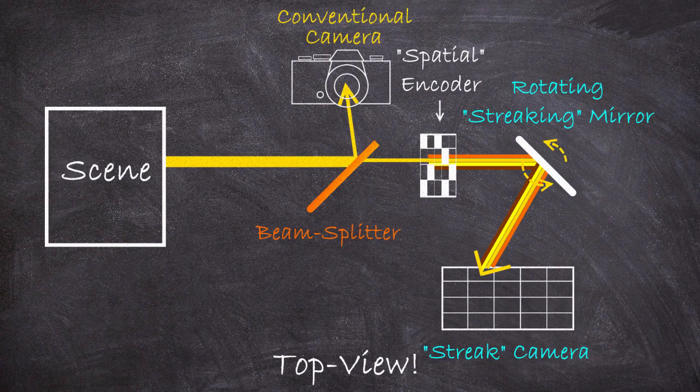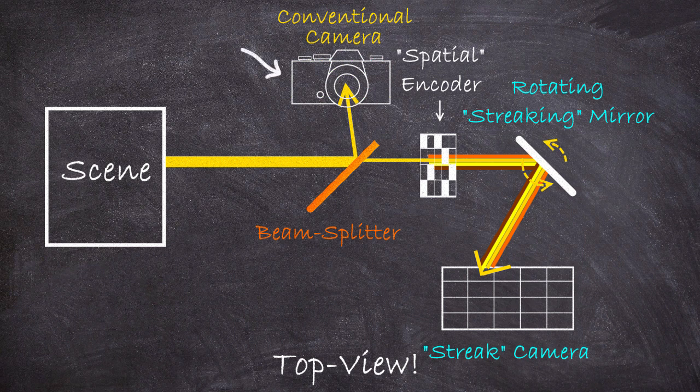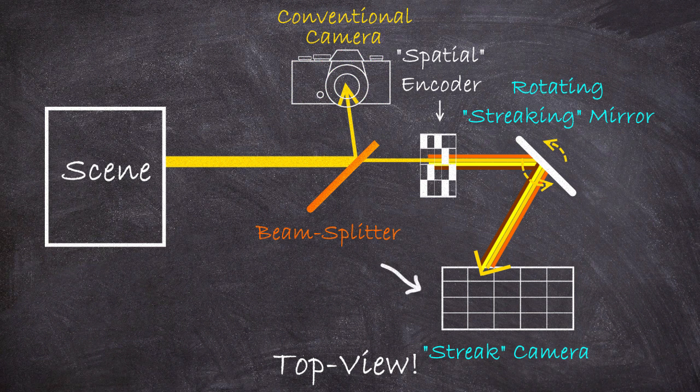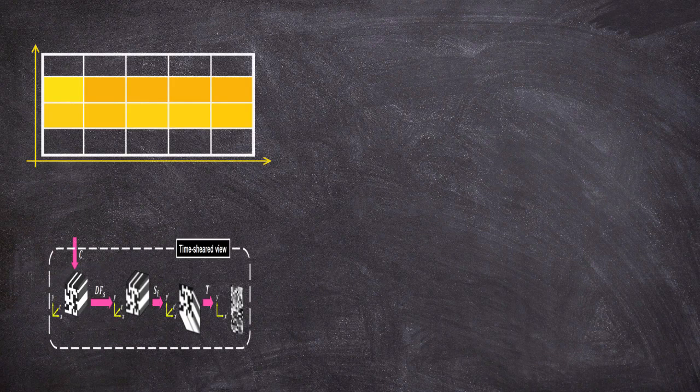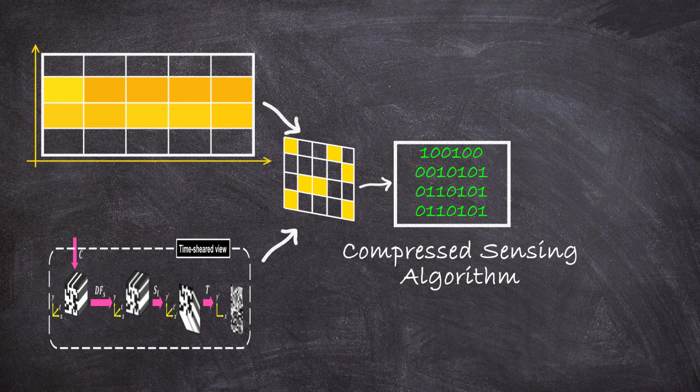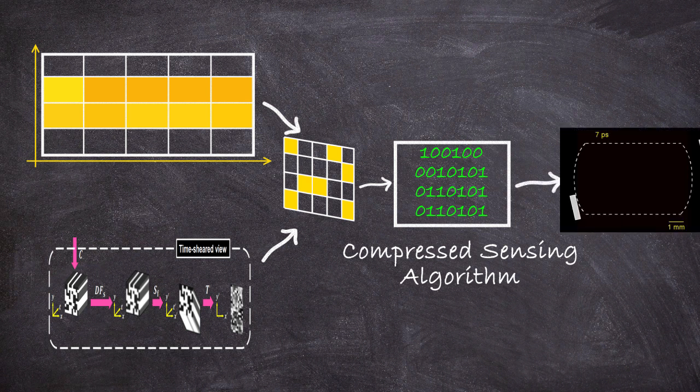and as the time sheared image gets generated the fact that you've left these spatial fingerprints on the image helps you tease out what is spatial information and what is temporal and that's it that's how the teacup camera works it takes a single exposure the light of which is split into two one branch goes to a conventional camera that takes a temporally integrated image in the other first passes through a spatial encoder which leaves a known fingerprint on the light and then is swept across a streak camera in real time to produce a time sheared image given those two pictures the time sheared and temporally integrated one plus knowledge of the spatial encoding the compressed sensing algorithm has all it needs to do its sherlock holmes thing and voila